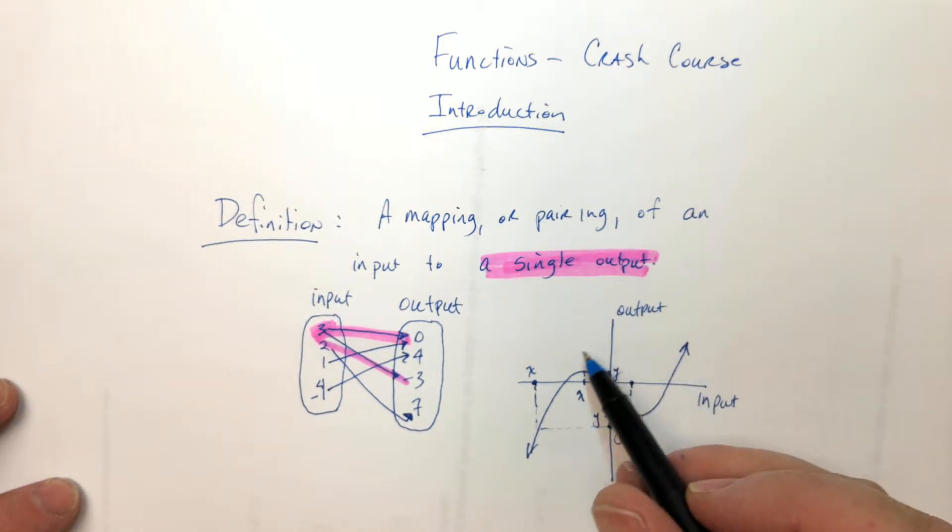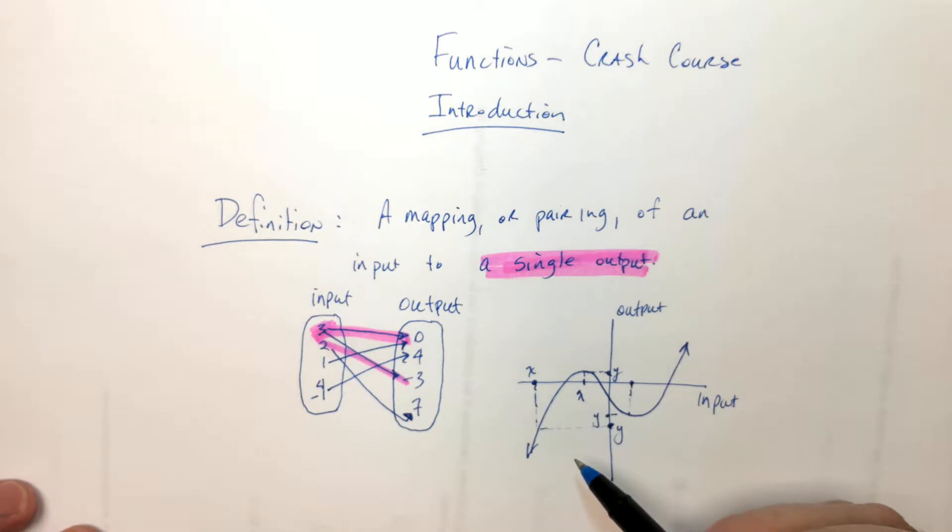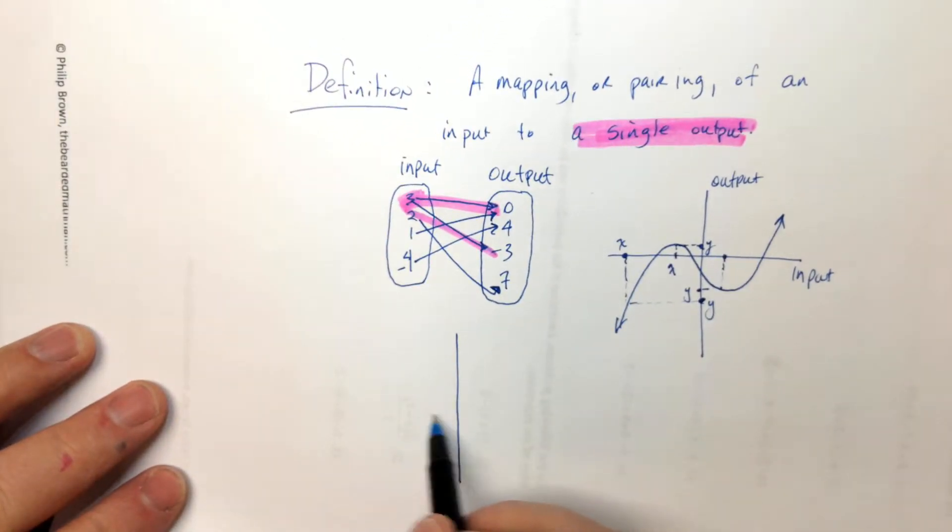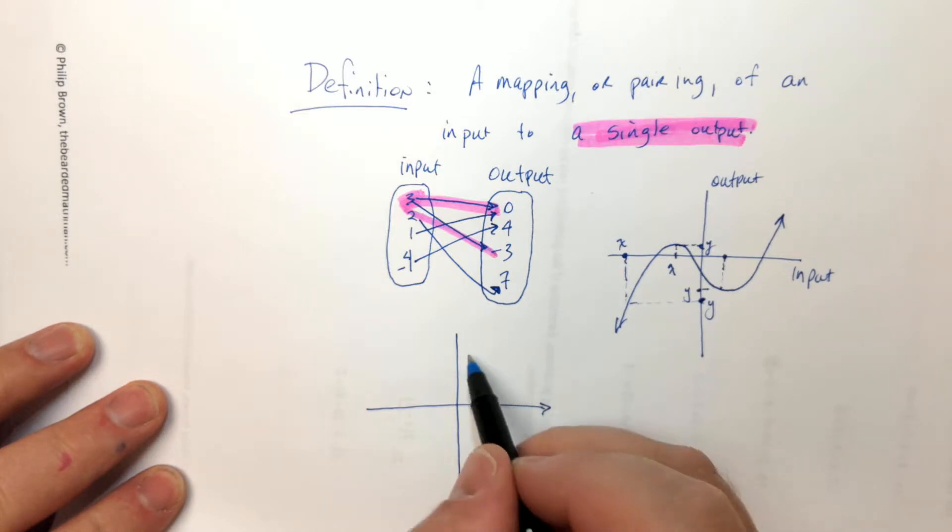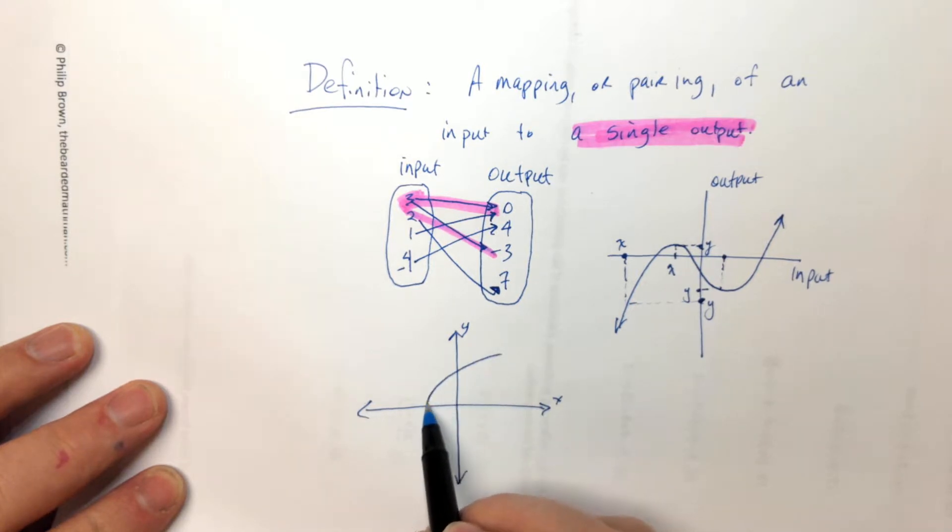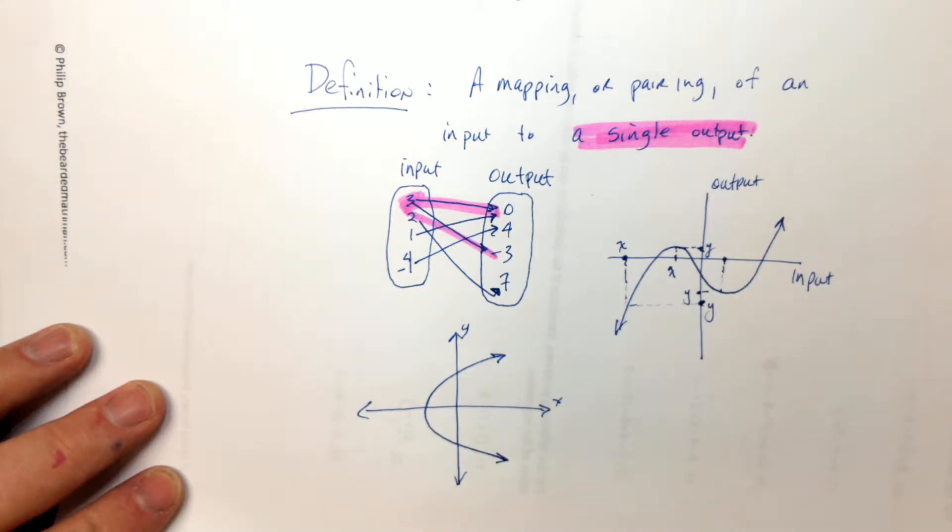It's kind of hard to see that this is a function by the graph, but if I show you a not function on the graph, it's going to be obvious. You ready? Okay, Ivan, I'm going to show you a not function on the graph. So here's y, here's x. Here's a not function.